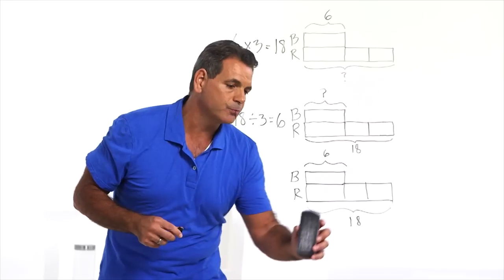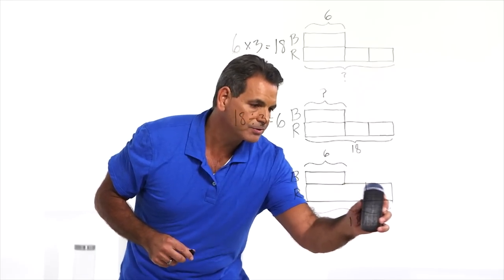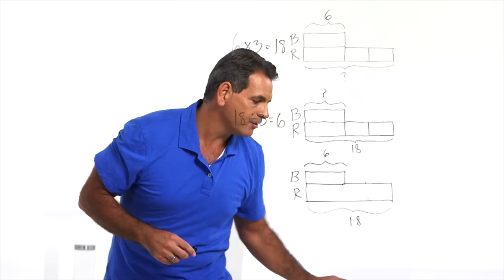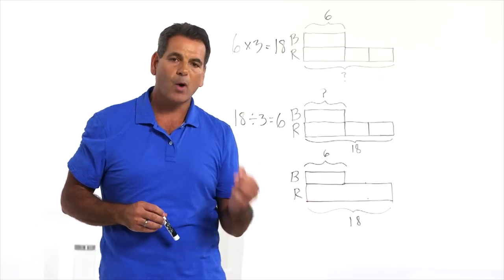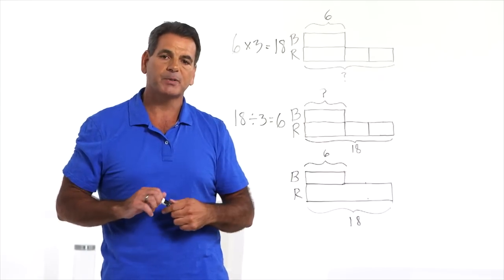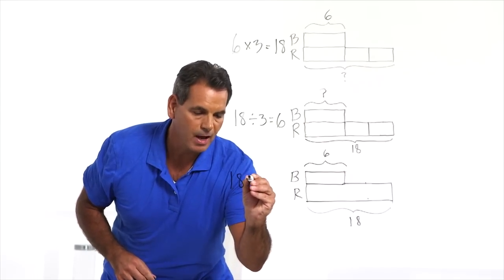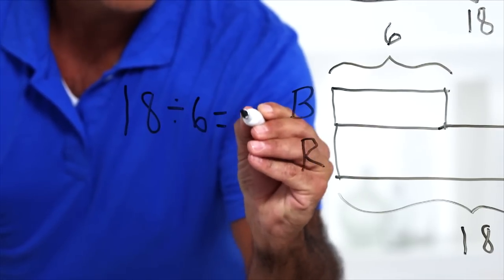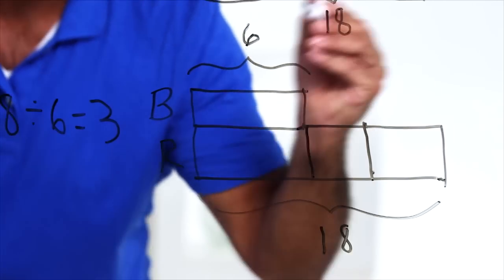In actuality, what the student would do is draw the $6 blue hat and draw just a bar for the $18 red hat. And they would use the equation to determine how to split up those bars. So 18 divided by 6 equals 3. They know they have to make this 3 times as large.